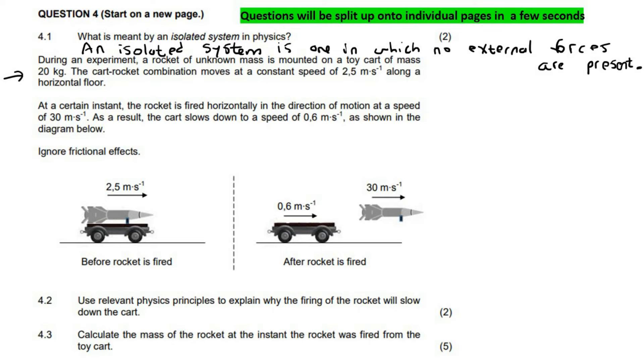So it says, during an experiment, a rocket of unknown mass is mounted on a toy cart of mass 20 kilograms. Okay, so we don't know the mass of the rocket, but we know that this toy cart is 20 kilograms. The cart rocket combination moves at a constant speed of 2.5 along a horizontal floor, as we can see over here.